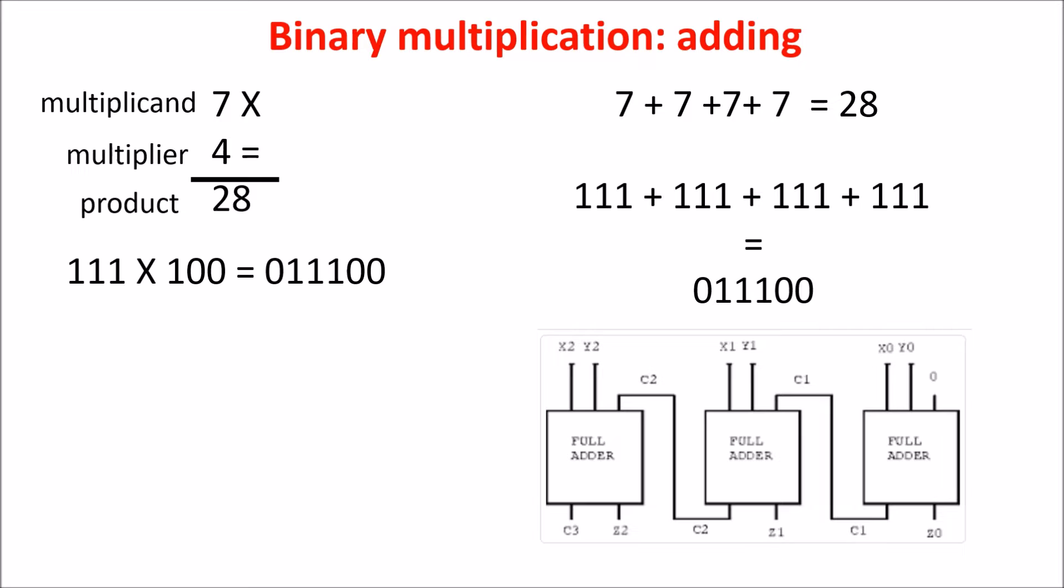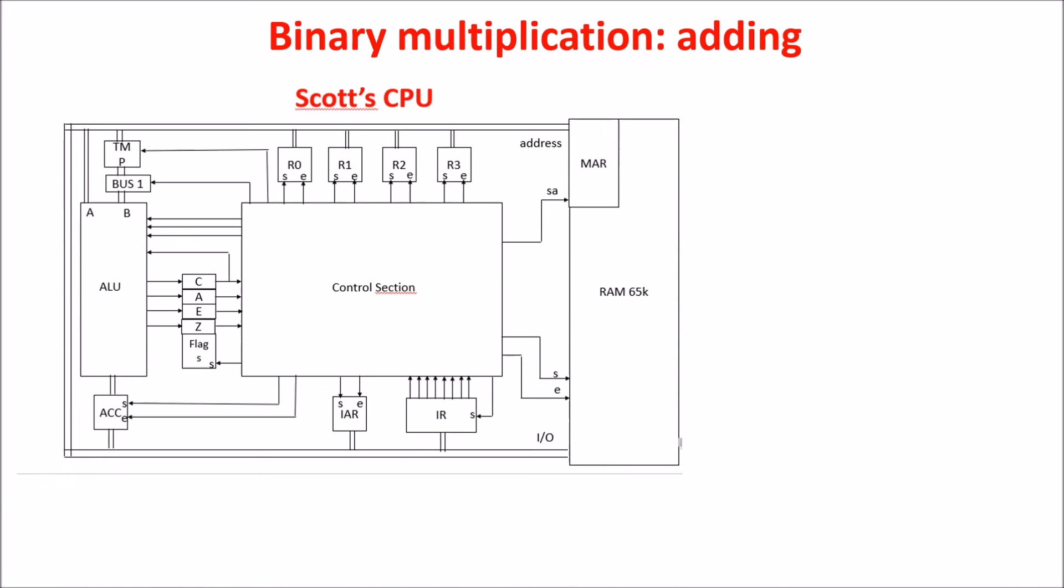In fact, multiplying is just adding the multiplicand to itself a certain number of times, equal to the multiplier. The SCOT CPU, which I described in previous videos and which I leave the link in the description, doesn't have a multiplier circuit and it can use, for example, the adder to perform the multiplication.